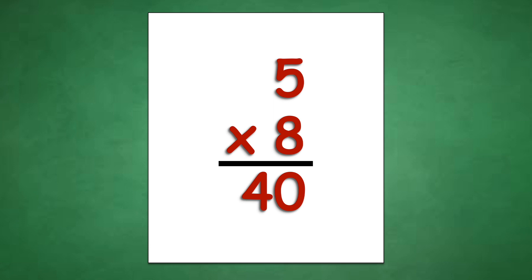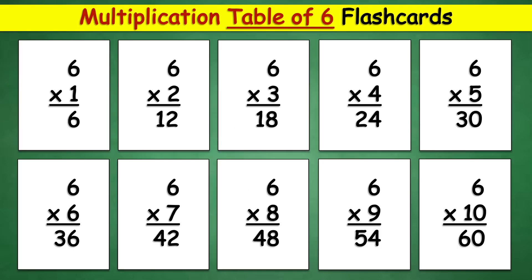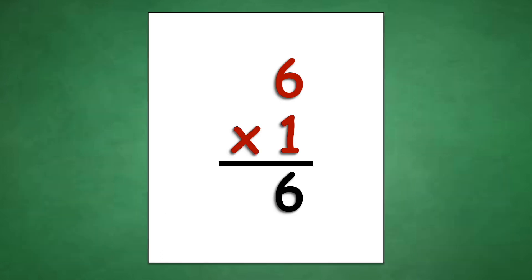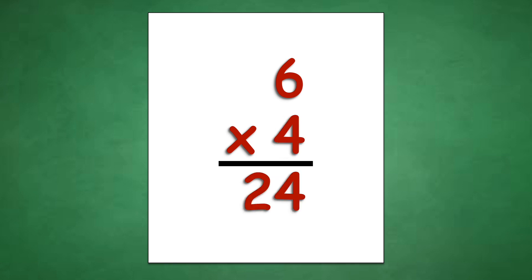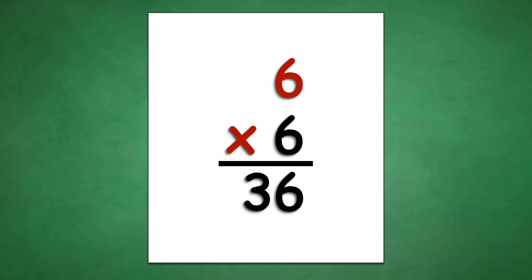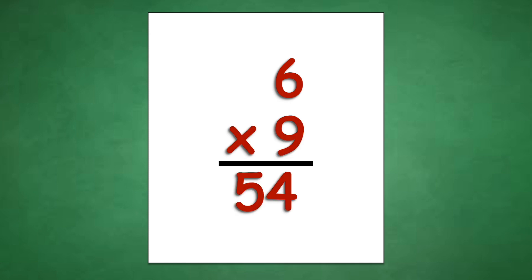Table of 6: 6 times 1 equals 6, 6 times 2 equals 12, 6 times 3 equals 18, 6 times 4 equals 24, 6 times 5 equals 30, 6 times 6 equals 36, 6 times 7 equals 42, 6 times 8 equals 48, 6 times 9 equals 54.